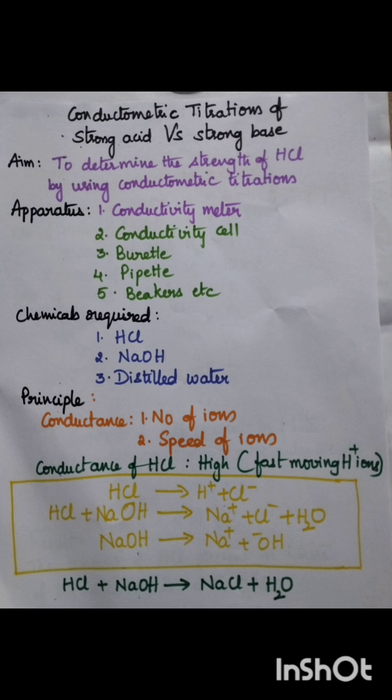Aim of the experiment is to determine the strength of HCl by using conductometric titrations. Apparatus include conductivity meter, conductivity cell, burette, pipette, and beakers.